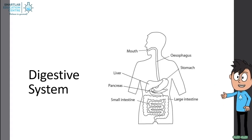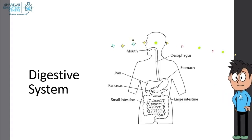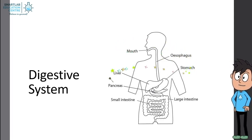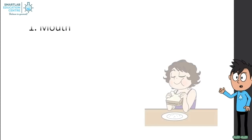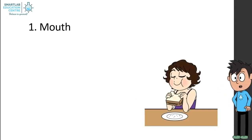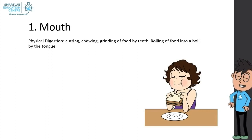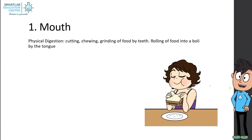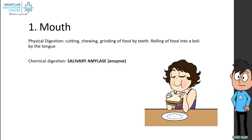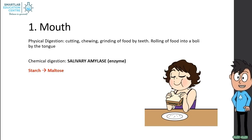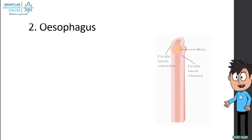Let's take a look at the human digestive system. It consists of the mouth, esophagus, stomach, liver, pancreas, small intestine, and large intestine. First, the mouth — the first place where food enters the body. Physical digestion occurs here, consisting of cutting, chewing, and grinding of food by teeth, and rolling of food into a bolus by the tongue. For chemical digestion, salivary amylase is used — it breaks down starch into maltose.